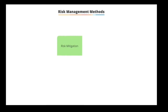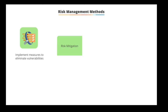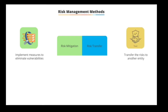Risk mitigation involves measures to eliminate or reduce the vulnerability — for example, prioritizing, evaluating, and implementing the appropriate risk-reducing controls. Risk transfer means moving the risk impact from an organization to another entity — for example, transferring the risk by using options such as purchasing insurance to compensate for the loss.